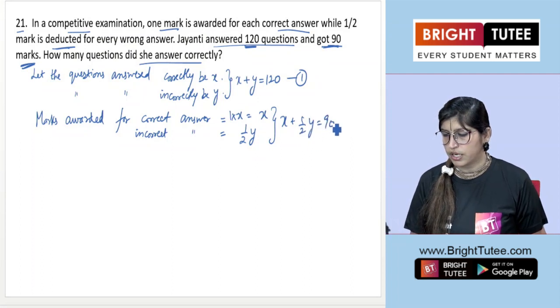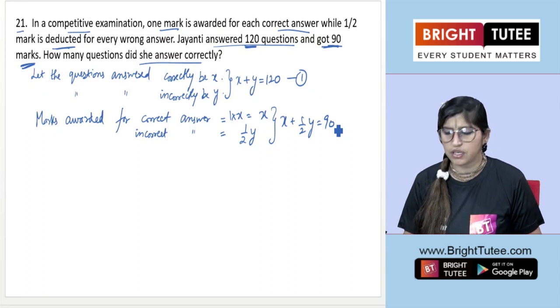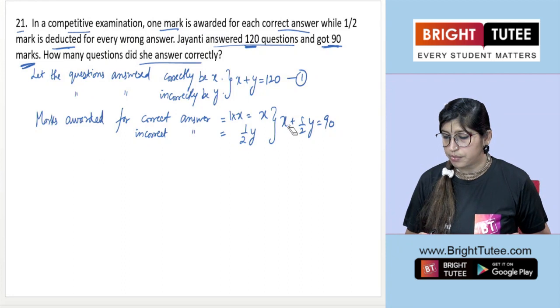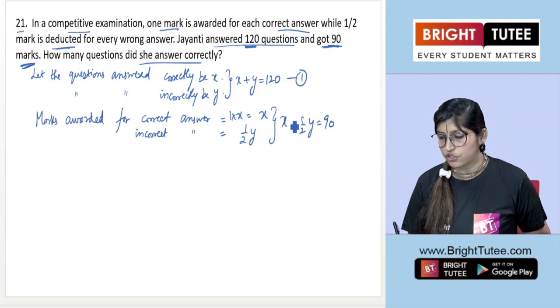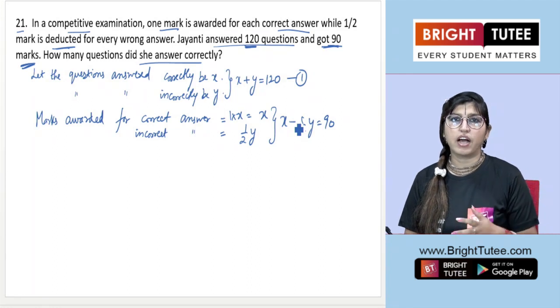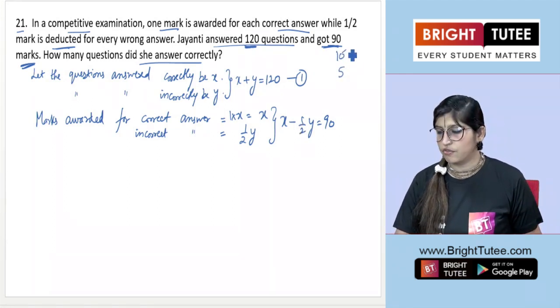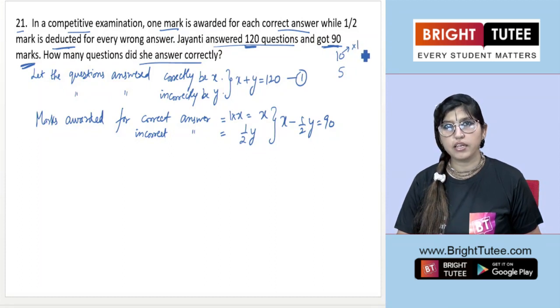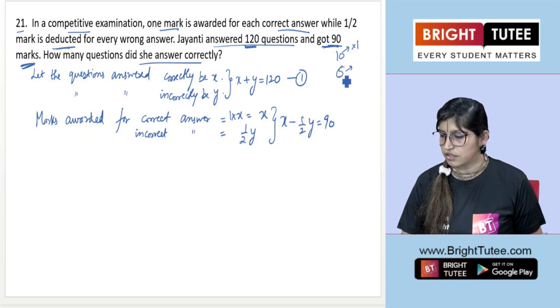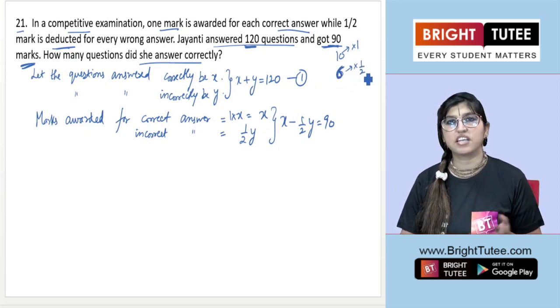The equation students generally have a problem with is they write x + (1/2)y = 90. We added x + y number of questions which equals 120. But for marks, it should not be x + (1/2)y = 90, it should be x - (1/2)y = 90. Why? Let's say you answered 10 questions correctly and 5 incorrectly.